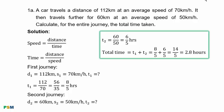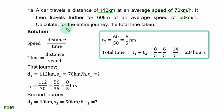Question 1A. A car travels a distance of 112 kilometers at an average speed of 70 kilometers per hour. It then travels further for 60 kilometers at an average speed of 50 kilometers per hour. Calculate for the entire journey the total time taken.